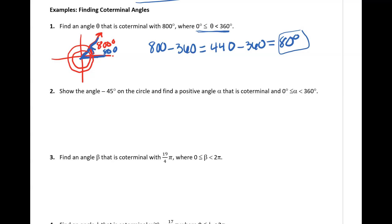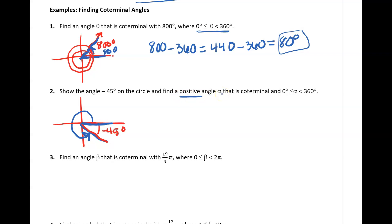The next example says: show the angle negative 45 degrees on the circle and find a positive angle alpha that is coterminal, between 0 and 360. Since it's negative 45, we move clockwise — so I'm moving down negative 45 degrees. To find a positive coterminal angle between 0 and 360, moving counterclockwise: the entire circle is 360 degrees. If I subtract out this little part of 45 degrees, I get 315. So the coterminal angle moving counterclockwise all the way around is 315 degrees.